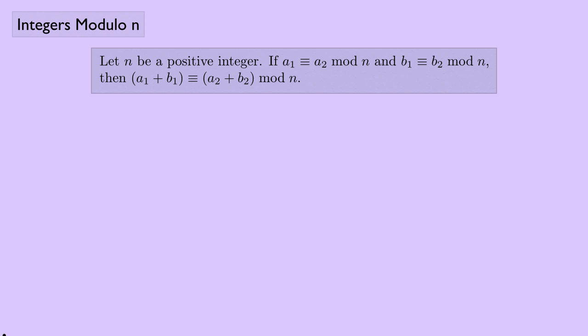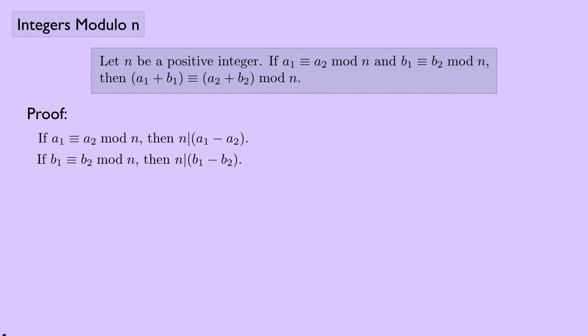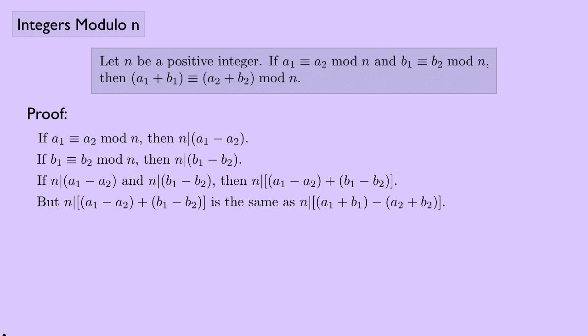Formal proof: Let n be a positive integer. If a₁ ≡ a₂ (mod n) and b₁ ≡ b₂ (mod n), then a₁ + b₁ ≡ a₂ + b₂ (mod n). If a₁ ≡ a₂ (mod n), then n | a₁ − a₂; similarly n | b₁ − b₂. Since n divides both, n divides (a₁ − a₂) + (b₁ − b₂) = (a₁ + b₁) − (a₂ + b₂). Therefore a₁ + b₁ ≡ a₂ + b₂ (mod n) by definition of congruence.